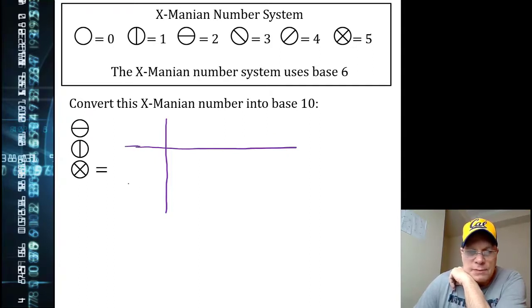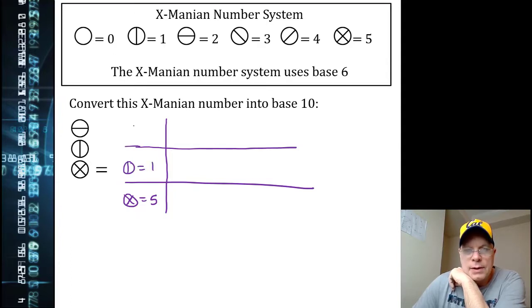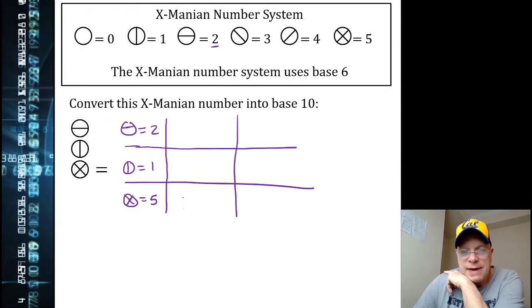We've got three place values here because we have three symbols. This symbol is five, this symbol is one, and this symbol is two. But then we represent the place values, what each place value represents.